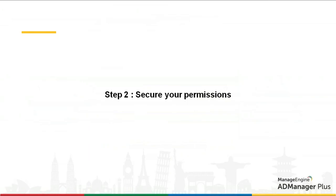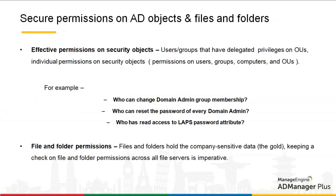The second fix: secure your permissions. Permissions are equally important in preventing security breaches. When I say permissions, I mean not just Active Directory security objects but also files and folders. You need to check all users and groups with delegated privileges over objects — for example, which user can change group memberships, which user can reset the password of every domain admin. Also monitor file and folder permissions, because your files and folders hold the gold for your organization — your data is your currency.